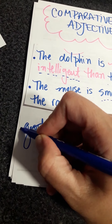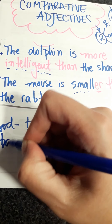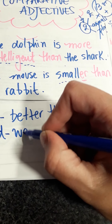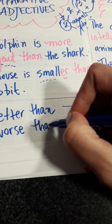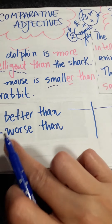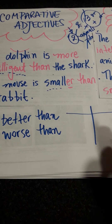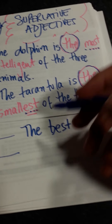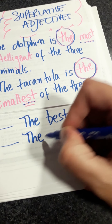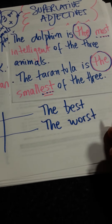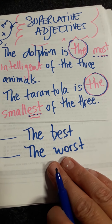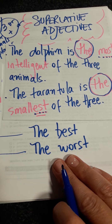The other exception to the rule is 'bad'. The comparative form of 'bad' is 'worse than'. For example, I am worse than my mother in mathematics. And the superlative form is 'the worst'. For example, the worst day in my life was when my father died.